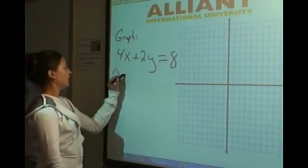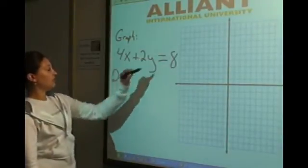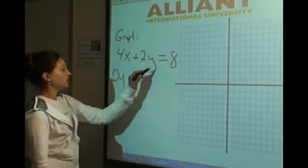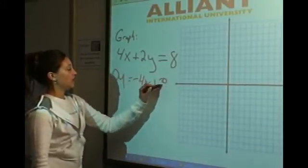So let's keep our 2y here equals, let's bring negative 4 onto that side, making it negative 4x plus 8. 8 stays positive.